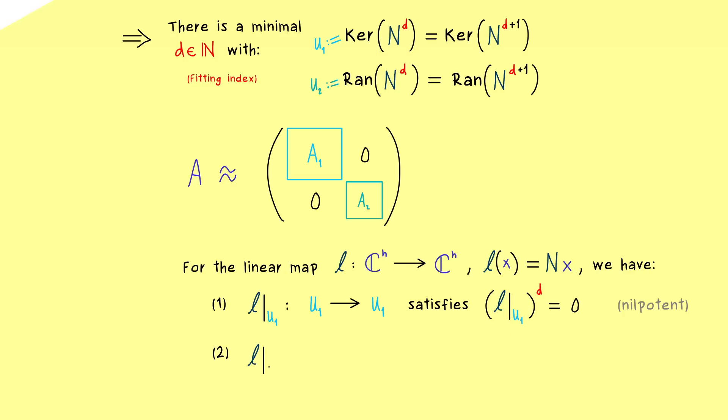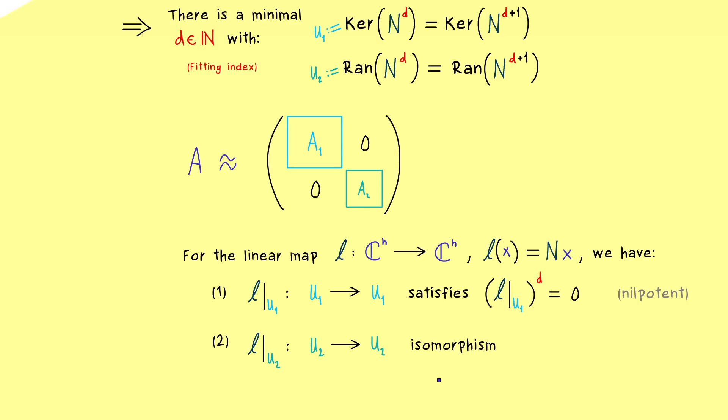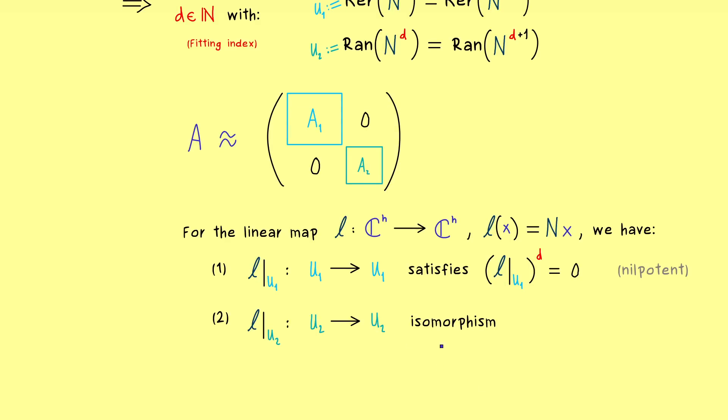On the other hand, we know that the second restriction we have is definitely not nilpotent. In fact, this maps the range into the range, and there we already know it is a bijective map. And a bijective linear map is what we call an isomorphism. Ok, so what we have here are two abstract linear maps where we can find matrix representations of.